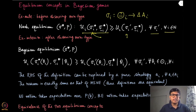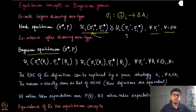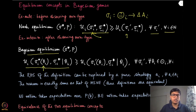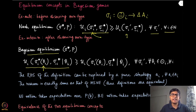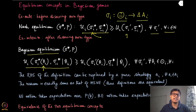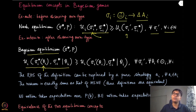In the ex-interim stage, when players have observed their own type but do not know the types of other players, the equilibrium concept is the Bayesian equilibrium. The strategies sigma_i are still a mapping from the type set to the simplex — the same in both ex-ante and ex-interim stages. The only difference is whether players can observe their own type or not. In the ex-ante case, we take the expectation with respect to p(theta_i) as well.